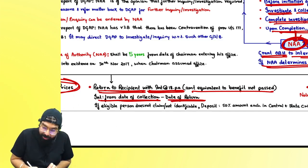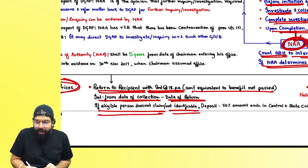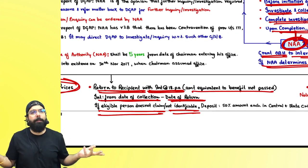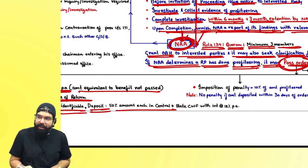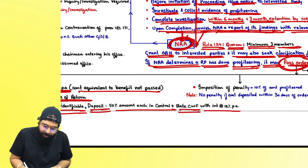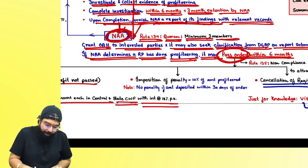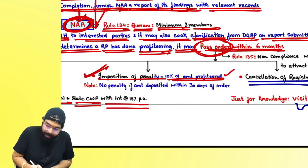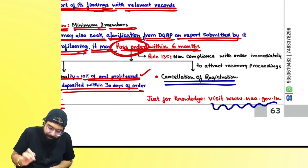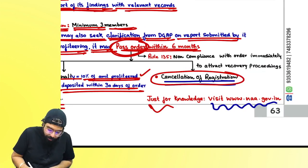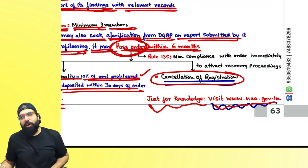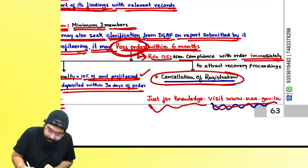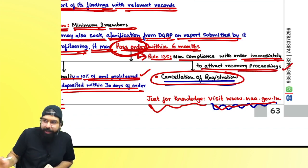The amount collected was never your profit — pay it immediately. If the eligible person cannot be identified, deposit 50% in the Central Consumer Welfare Fund and 50% in the State Consumer Welfare Fund with interest from date of collection till date of payment. The NAA can also impose a 10% penalty on the amount profiteered — but no penalty if the amount is deposited within 30 days of the order. They can also cancel your registration. Rule 135 says non-compliance with the order will attract recovery proceedings.